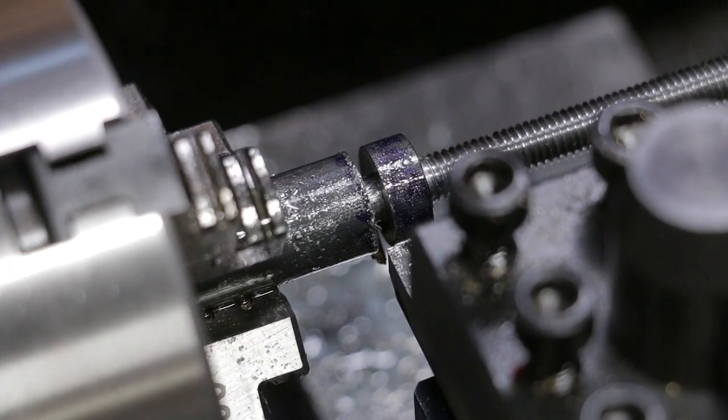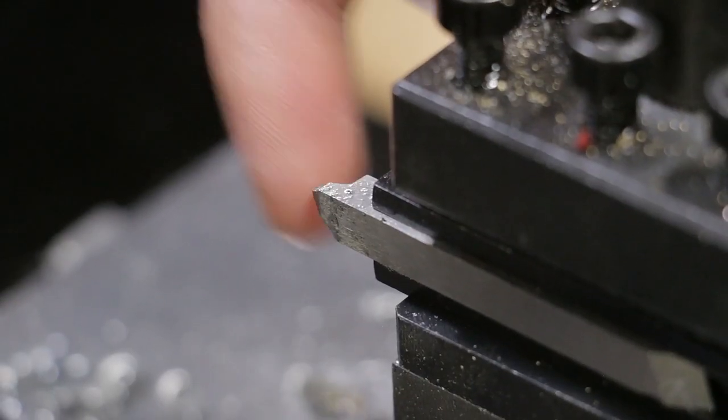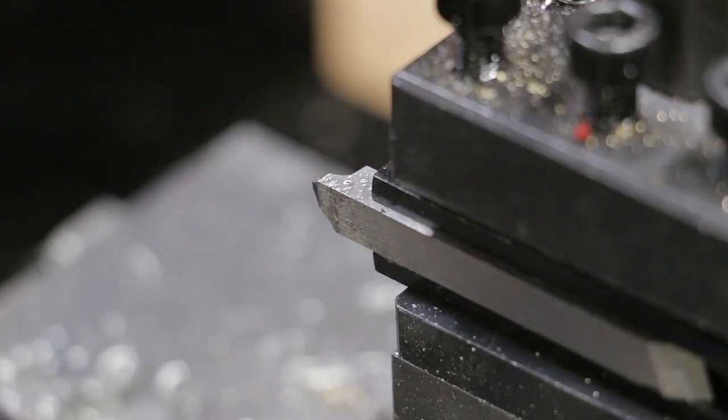All right then, so the tip of my parting tool broke off. I had my face shield on, I was fine. Now we'll just go cut this stuff on the band saw, it'll be okay.